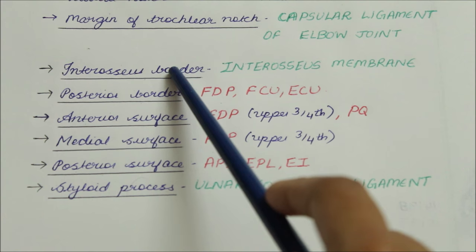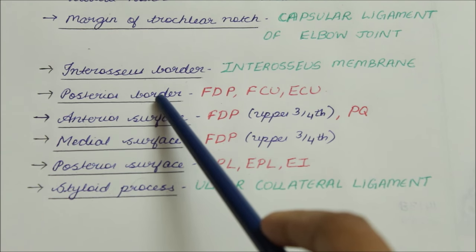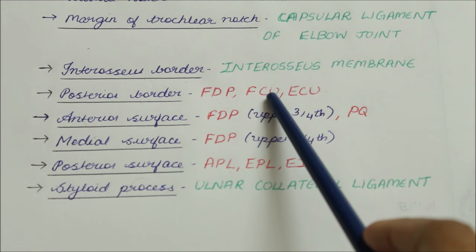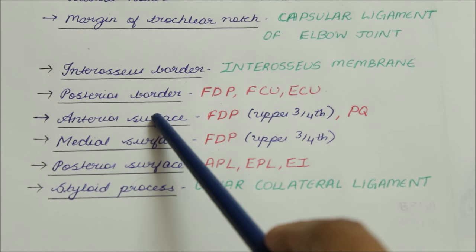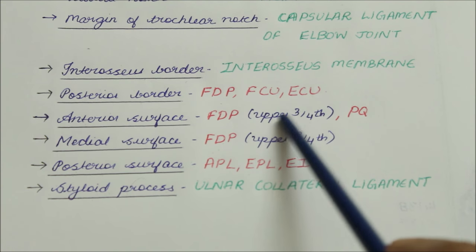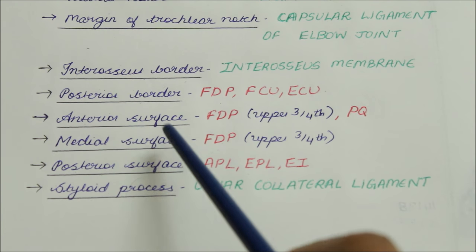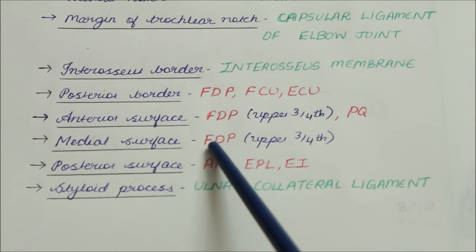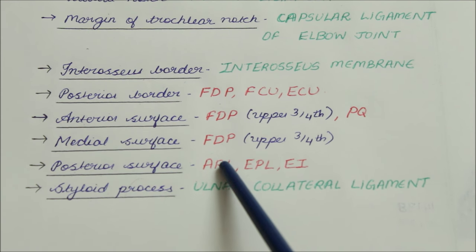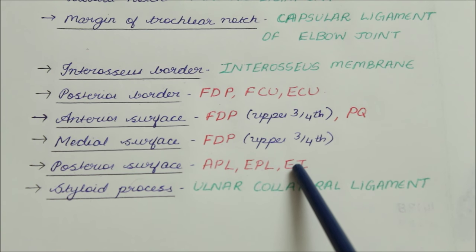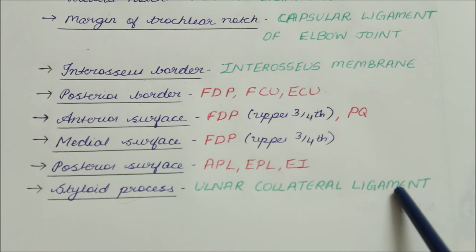The interosseous border of the shaft gives attachment to the interosseous membrane. The posterior border gives origin to the flexor digitorum profundus, the flexor carpi ulnaris, and the extensor carpi ulnaris through an aponeurosis. The anterior surface gives origin to the flexor digitorum profundus in its upper three-fourths and also to the pronator quadratus. The medial surface of the shaft gives origin to the flexor digitorum profundus in its upper three-fourths. The posterior surface gives origin to the abductor pollicis longus, the extensor pollicis longus, and the extensor indicis. Finally, the styloid process gives attachment to the ulnar collateral ligament.